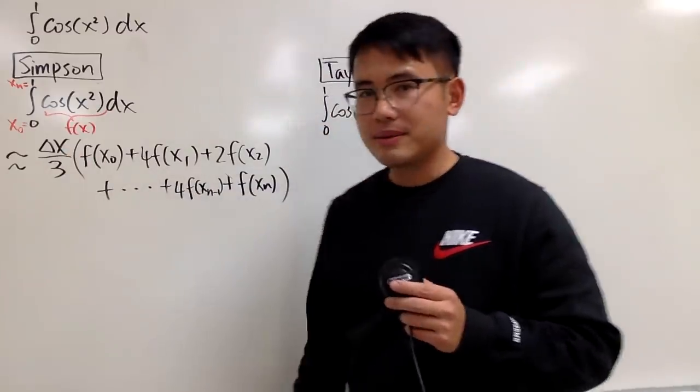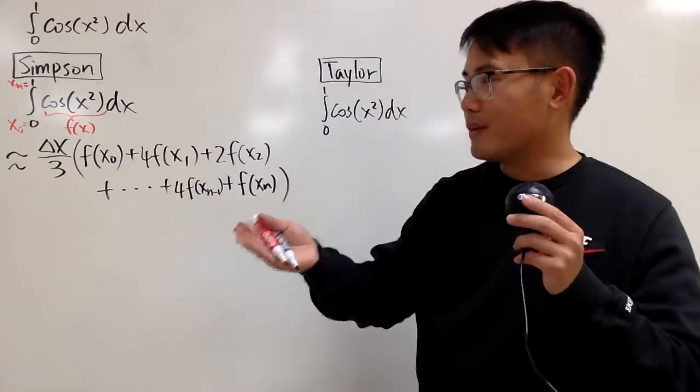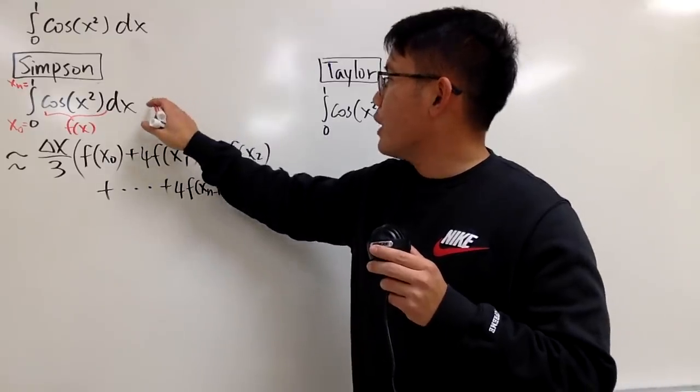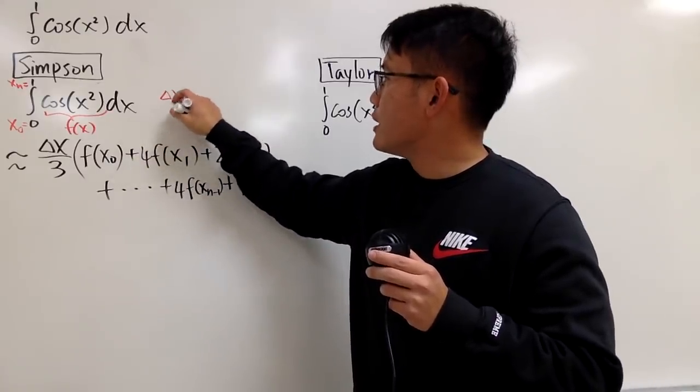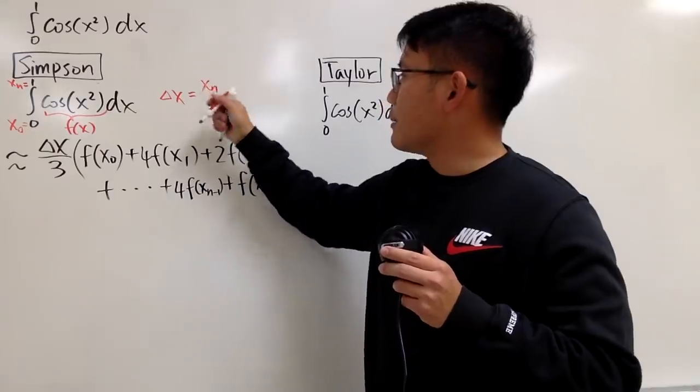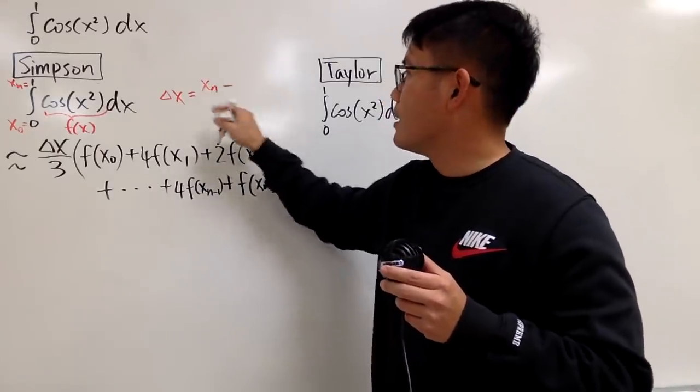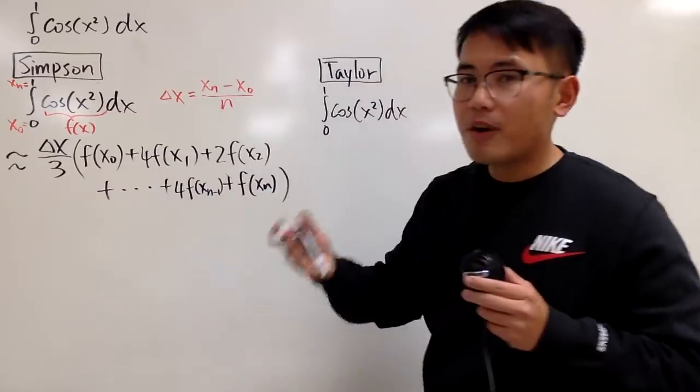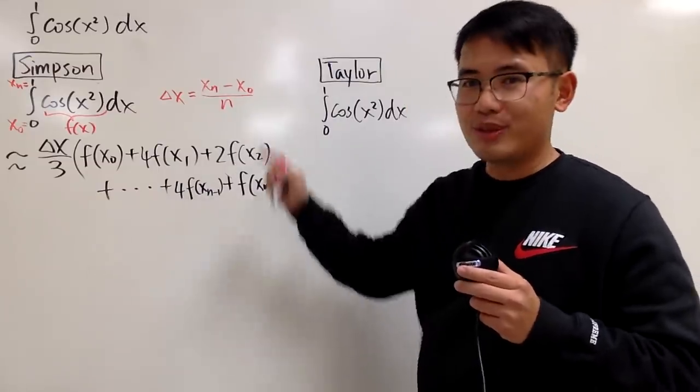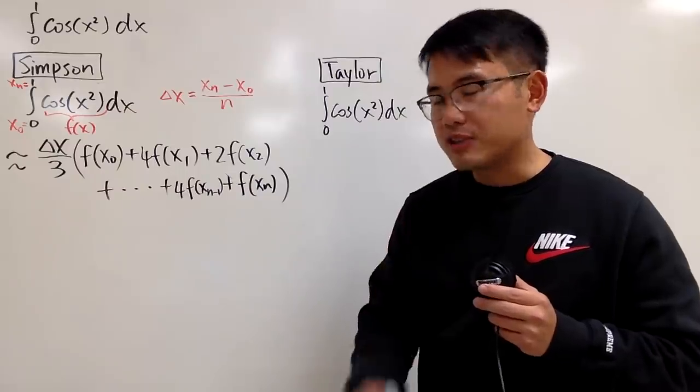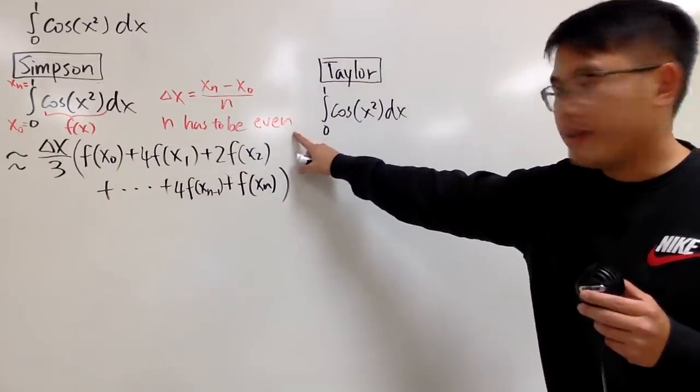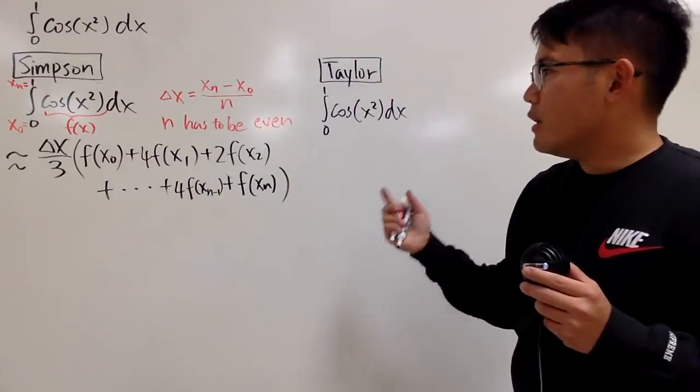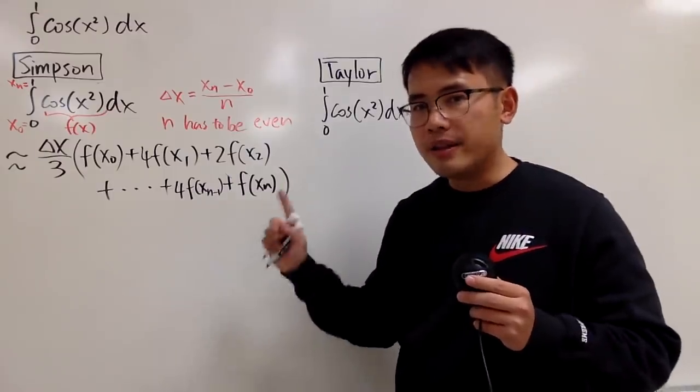What is delta x? First of all, you have to know the length of the interval that you are integrating. In this case, we have 0 to 1. For delta x, you're going to do xₙ, some people put b minus a which is okay, xₙ minus x₀, and then divide it by however many intervals you want to use, so divide by n. However, here's the catch: n has to be even.